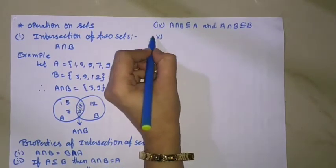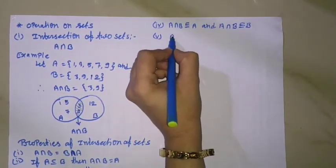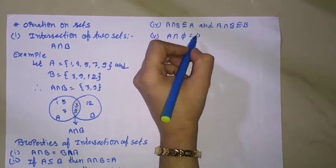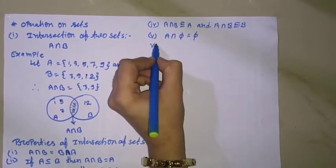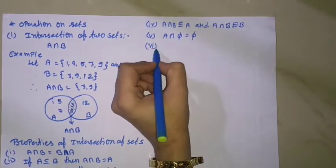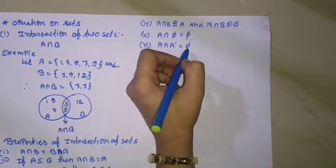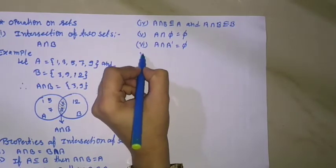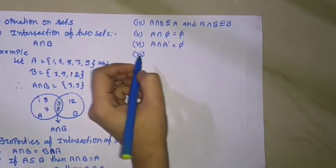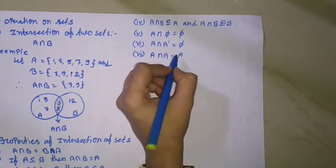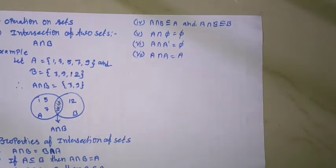Fifth: A intersection φ equal to φ. Sixth: A intersection A complement equal to φ. Seventh: A intersection A equal to A. Take different examples of sets and verify these properties.